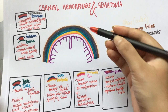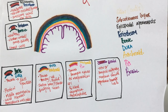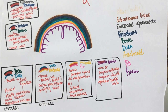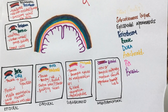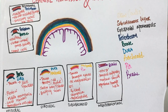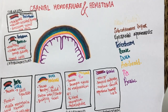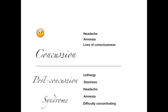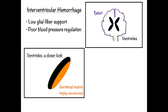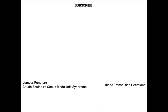To sum it up, we learned the different layers from the skin to the brain. We spoke about subdural, epidural, subarachnoid, and intraparenchymal hemorrhages, as well as subgaleal hemorrhage and cephalohematoma. We also discussed concussion and intraventricular hemorrhage. If you want me to make more videos like this, please give this video a thumbs up, share it with a friend, and don't forget to subscribe. Thank you for watching and I'll see you next time.